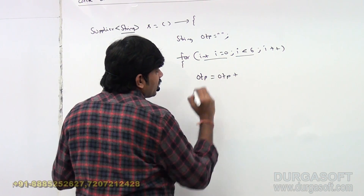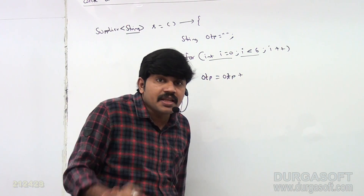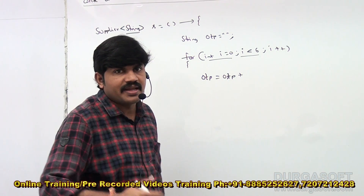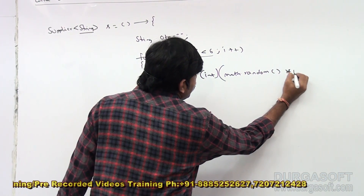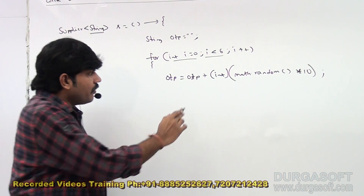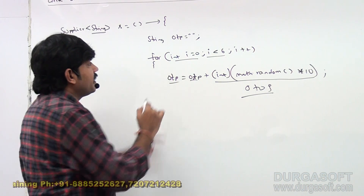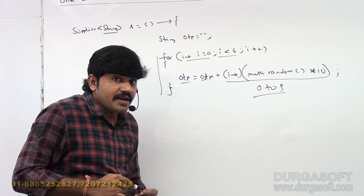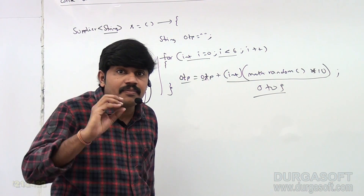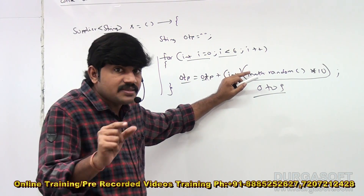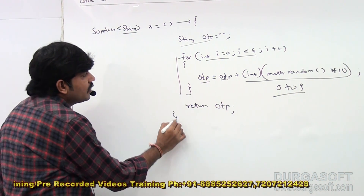Inside the loop: OTP = OTP + (int)(Math.random() * 10). Every iteration generates a random number from zero to nine, which is concatenated to the OTP string. This cycle repeats six times — so every time a digit is added. Then the function simply returns OTP. That's the logic.